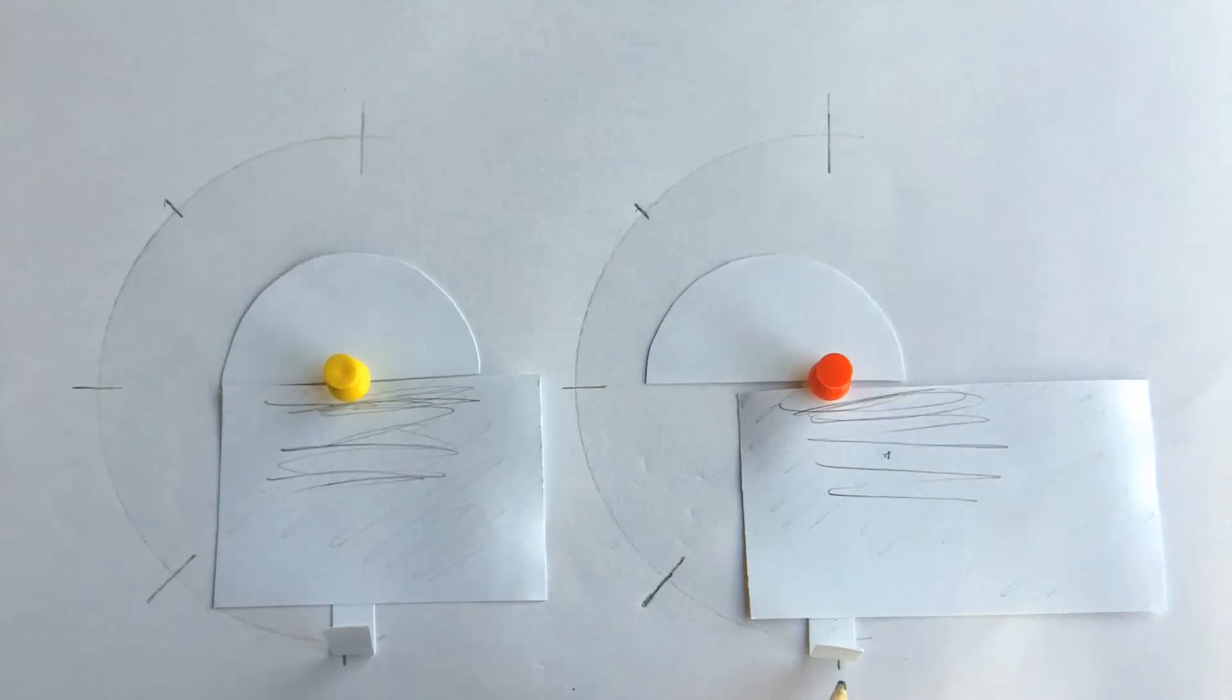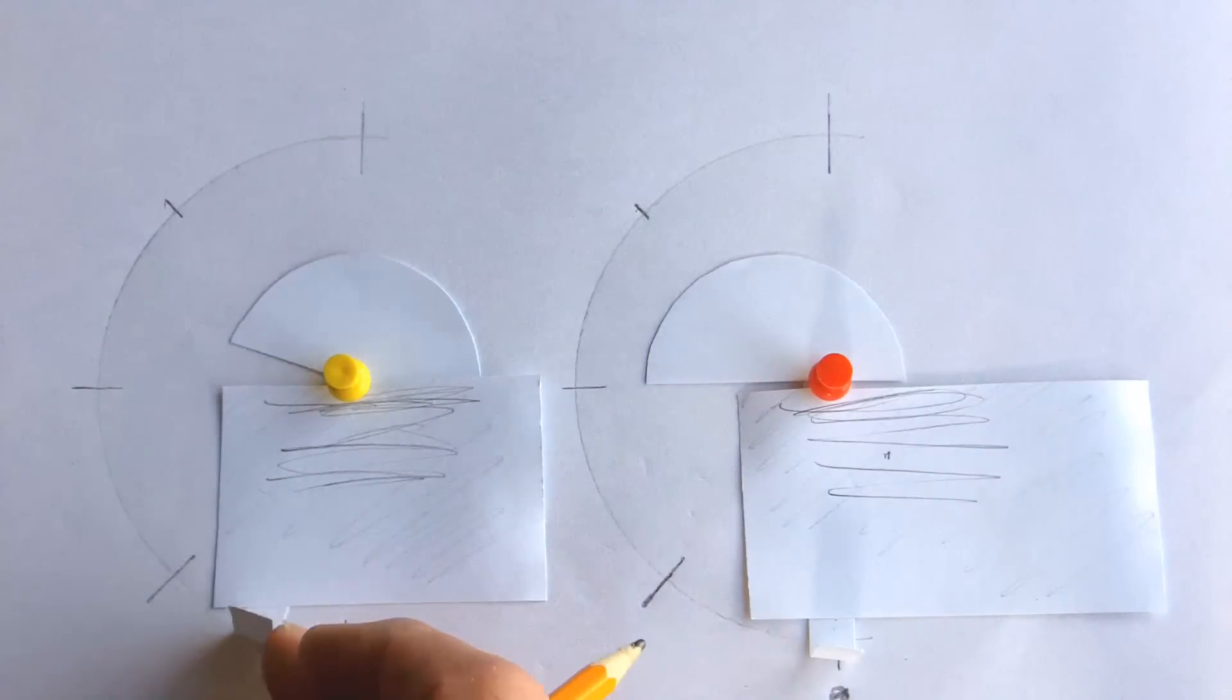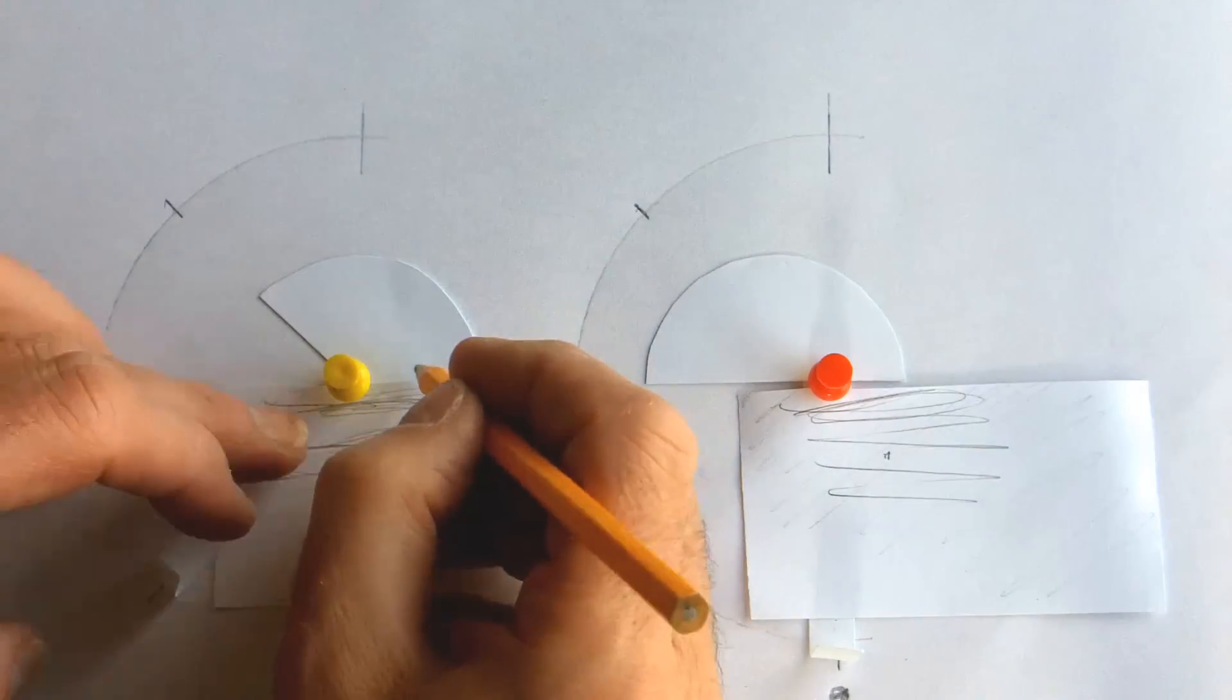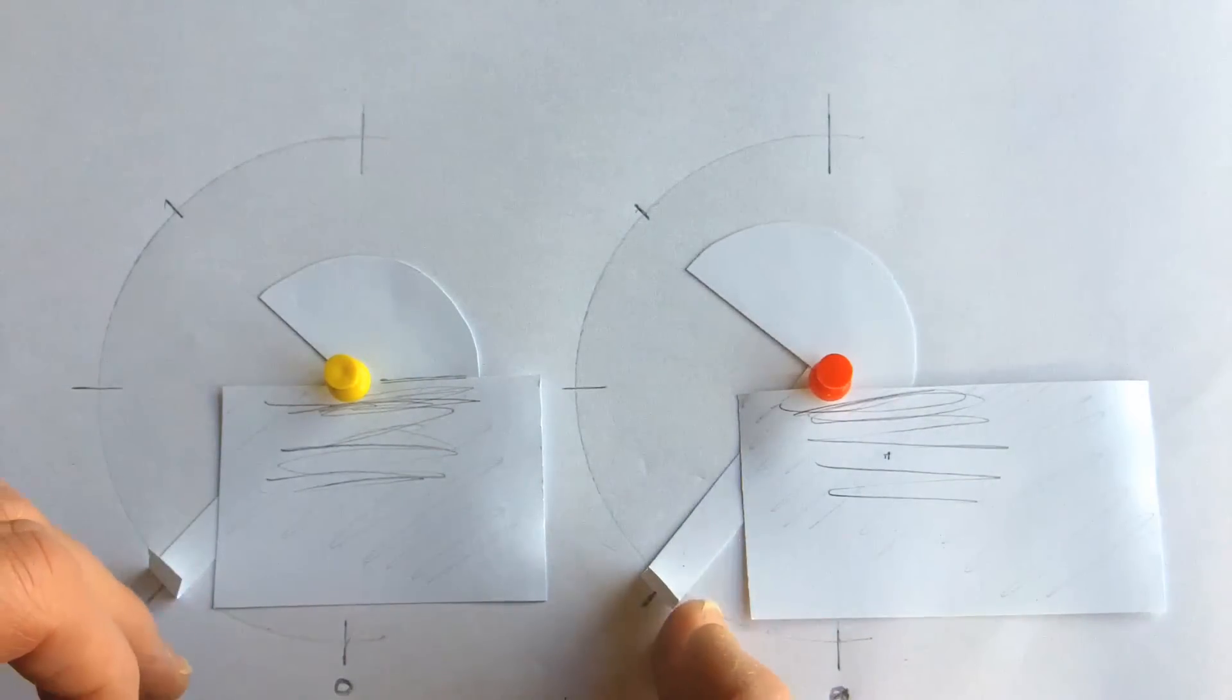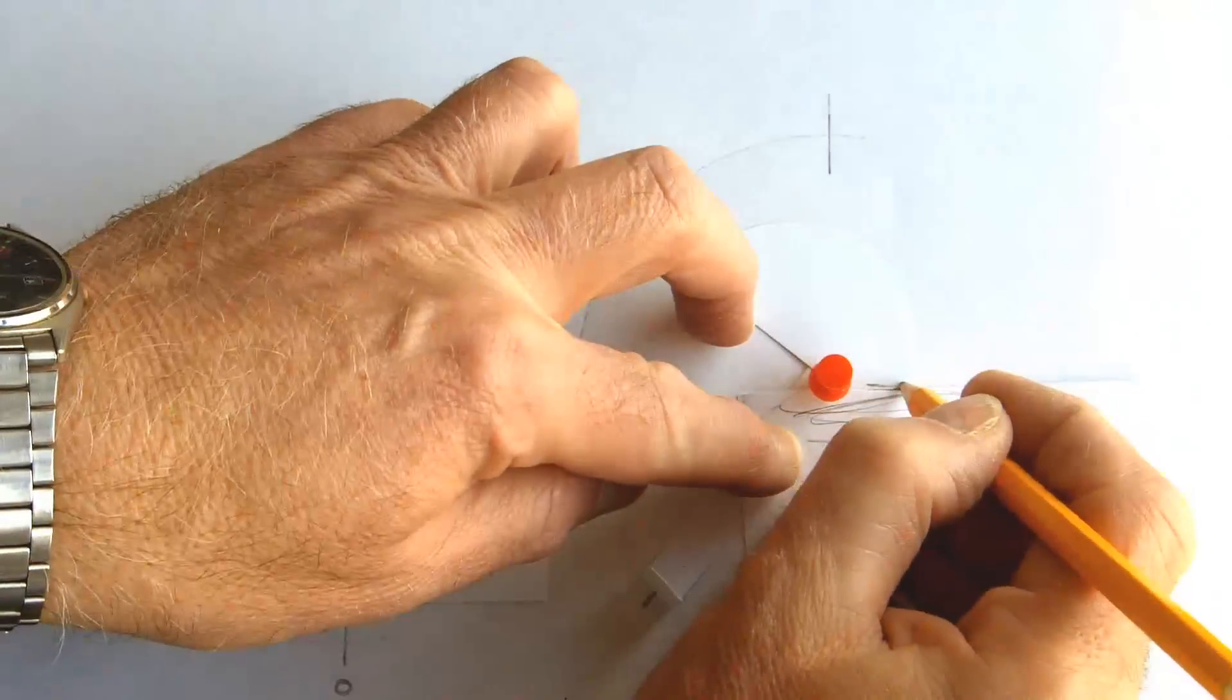So if I start off with them both at the bottom, we'll call that zero degrees. I'm trying to work around the tripod here. So if we move this one into there at 45 degrees, and put a little line on it, that one there at 45 degrees.